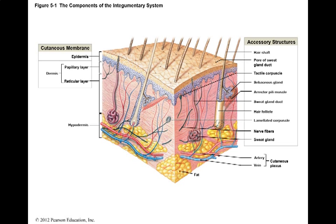This is Chapter 5 of the Integumentary System. The Integumentary System includes both the cutaneous membrane, which is the skin, and its associated hairs, nails, and glands. The Integumentary System accounts for about 16% of the total body weight.